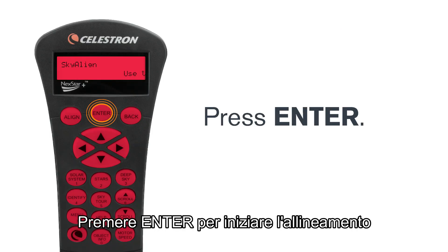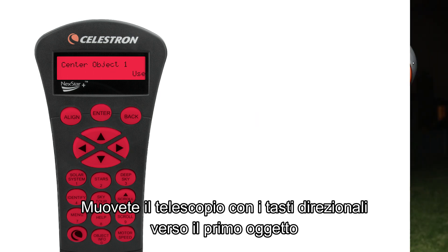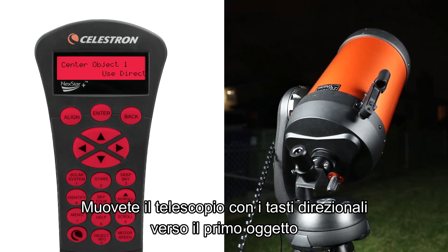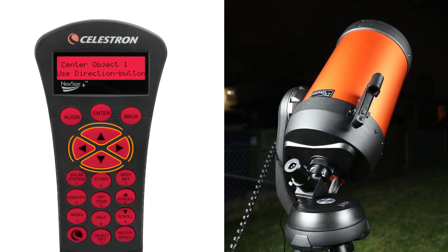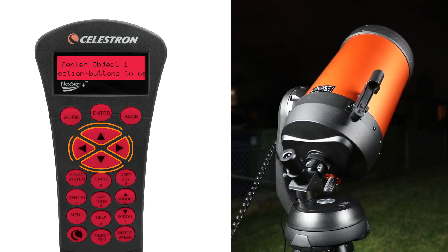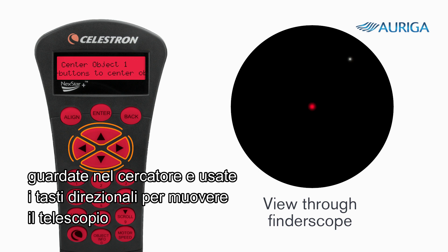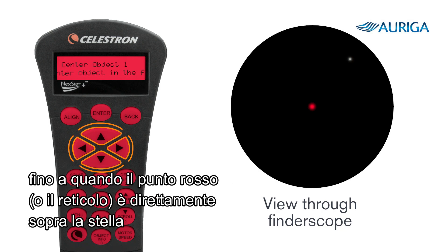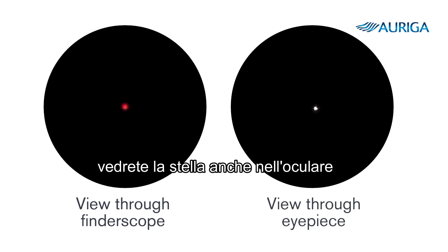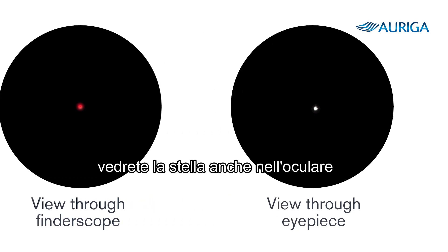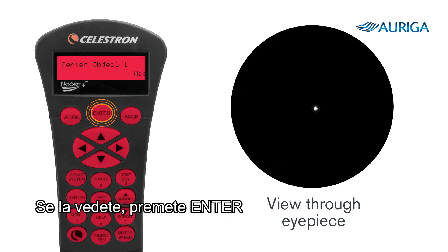Press enter to begin alignment. Use the hand control's directional buttons to move the telescope toward the first bright star. When you get close to your alignment star, look through the finder scope and use the directional buttons to move the telescope so that the finder scope's reticle or red dot is directly on top of the star. If your finder scope was properly aligned, you should see the star in your eyepiece. If it's there, press enter.